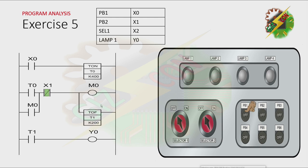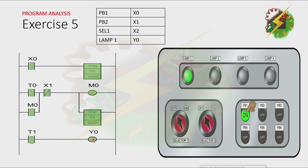Now let's press PB1. Because X0 is energized, T0 will be activated after 4 seconds. Because T0 is activated, M0 will be activated here. And timer 1 here is activated, which is a timer of delay. That will cause T1 here to activate also, and that will make Y0 to be energized. Because of that, lamp 1 will turn on.